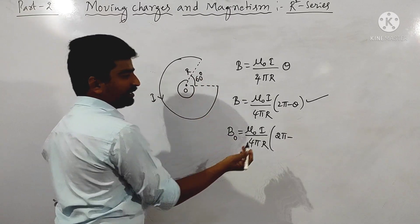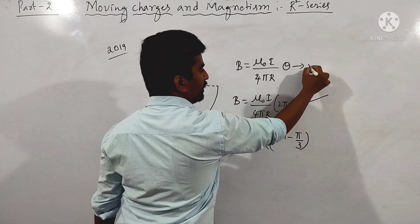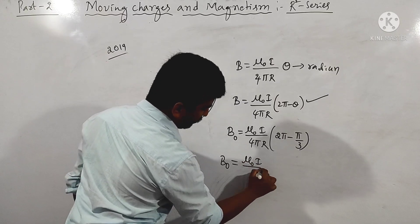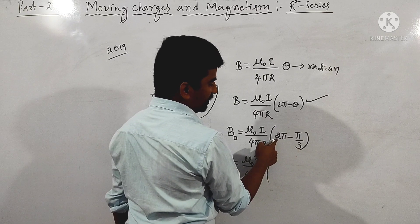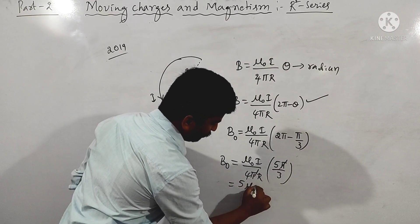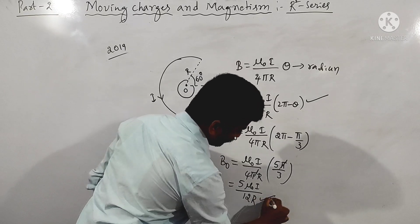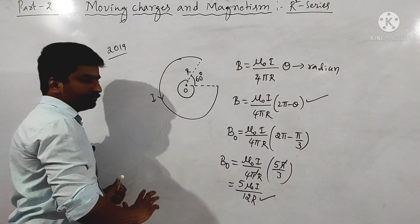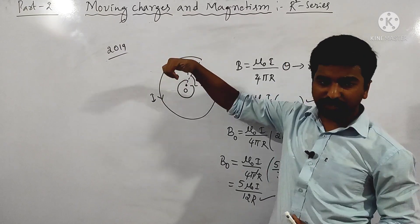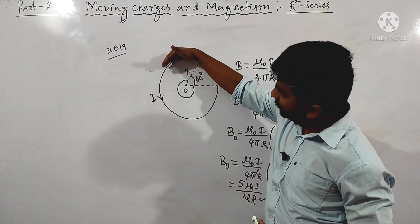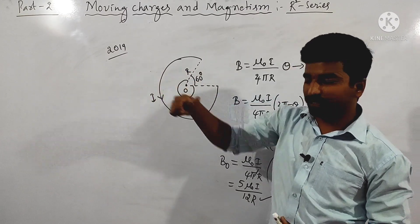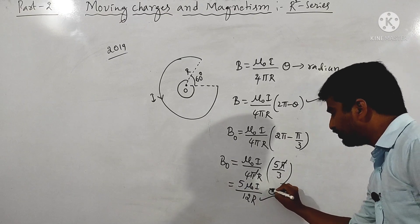Theta is 60 degrees, converted to radians that is pi by 3. Substituting: B equals mu naught i divided by 4 pi r into (2 pi minus pi by 3), which gives mu naught i divided by 4 pi r into 5 pi by 3. The pi terms cancel, leaving the magnetic field at the center as 5 mu naught i divided by 12 r. This is the answer for the given question.